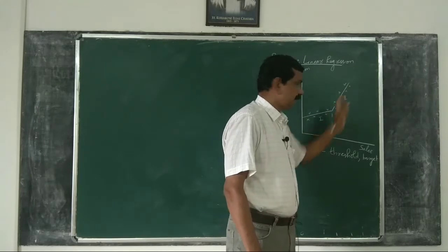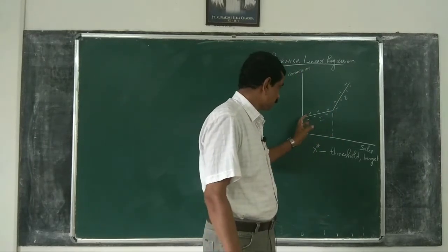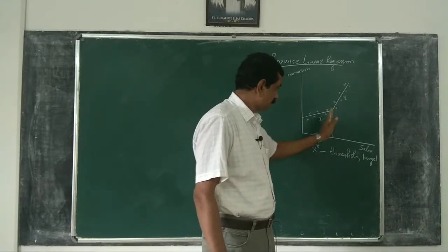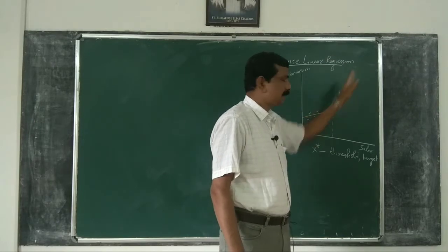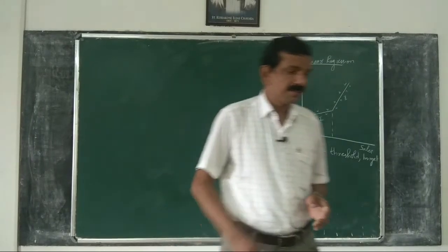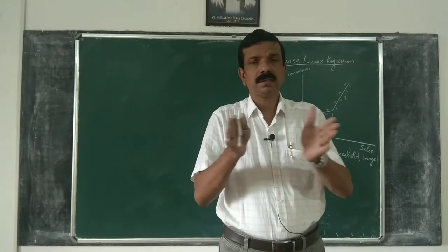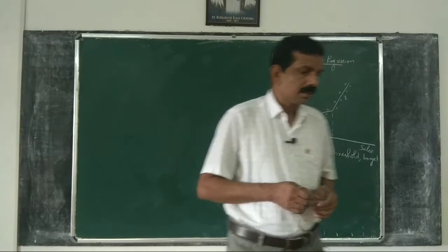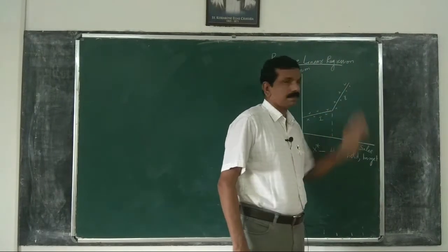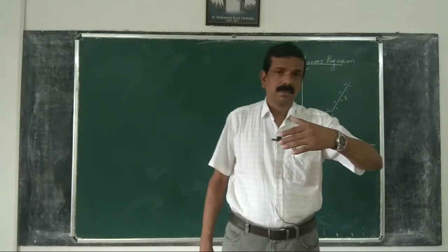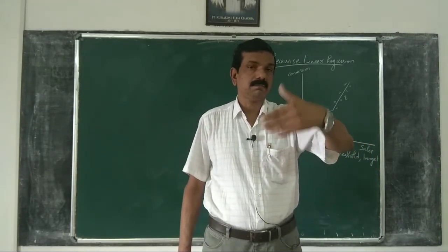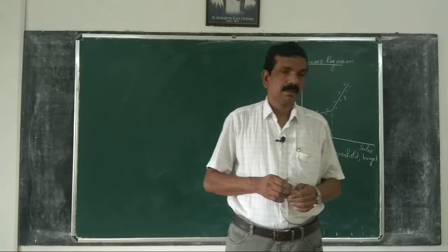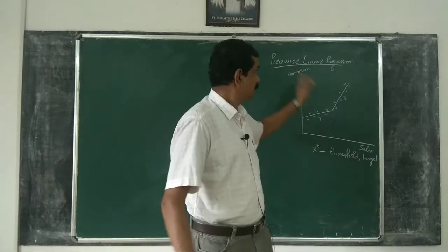Both segments are linear, but the slopes are different. For the first segment, there is one slope — the commission rate — and beyond x*, another. Commission increases linearly up to x*; beyond that, it also increases linearly but with a steeper slope. That is, the commission rate increases beyond x*. So we have what is known as piecewise linear regression.